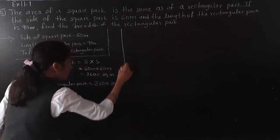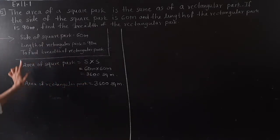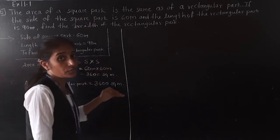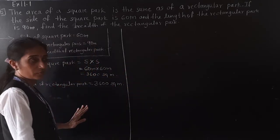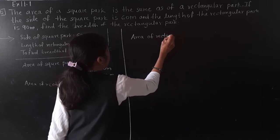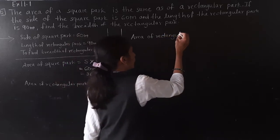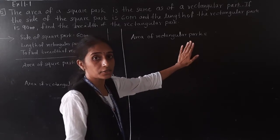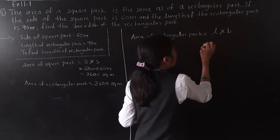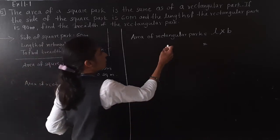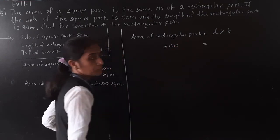Now we have the area of rectangular park. We also know the length of rectangular park. We have to find the breadth of the rectangular park. Area of rectangular park is 3600 square meter, and length is given as 90 meter. Let's write the formula for area of rectangle: length multiplied by breadth.